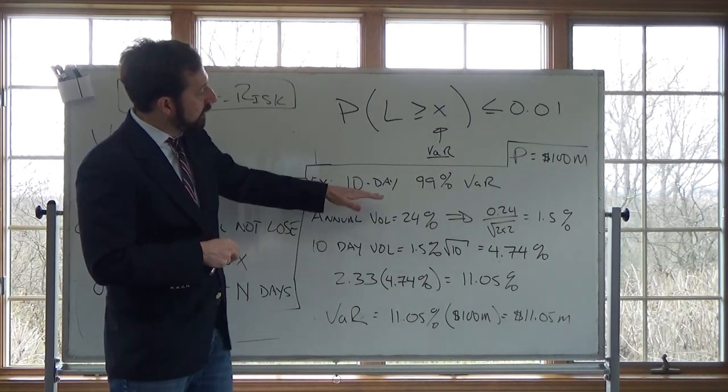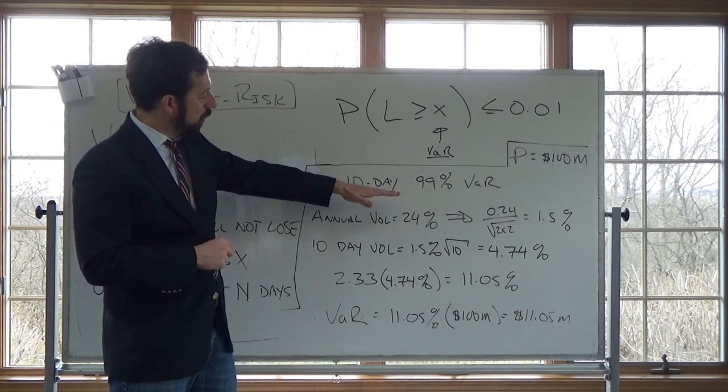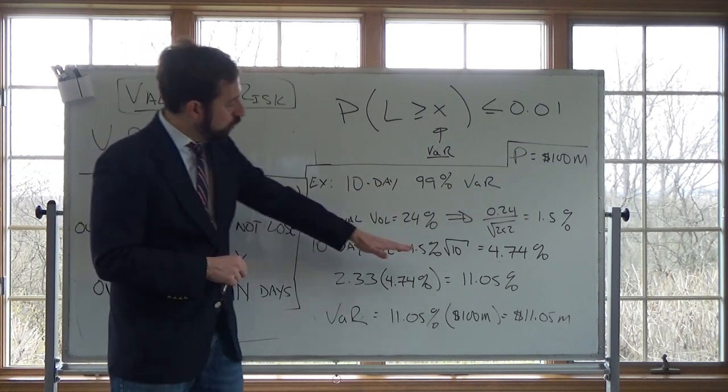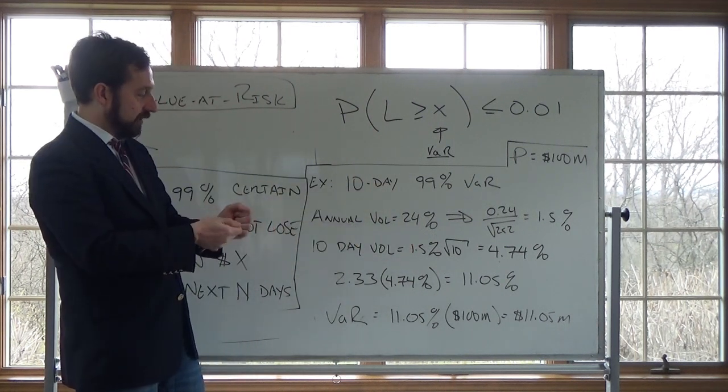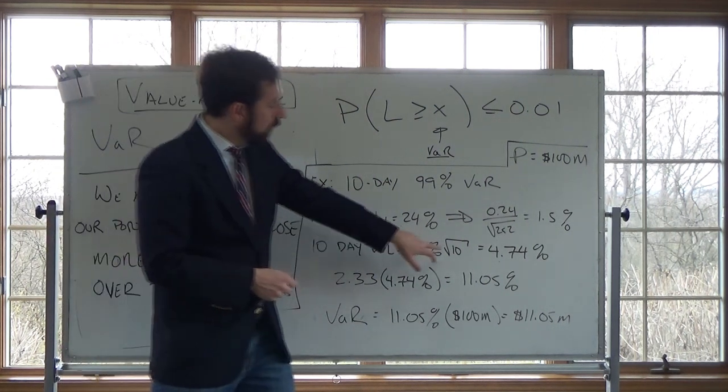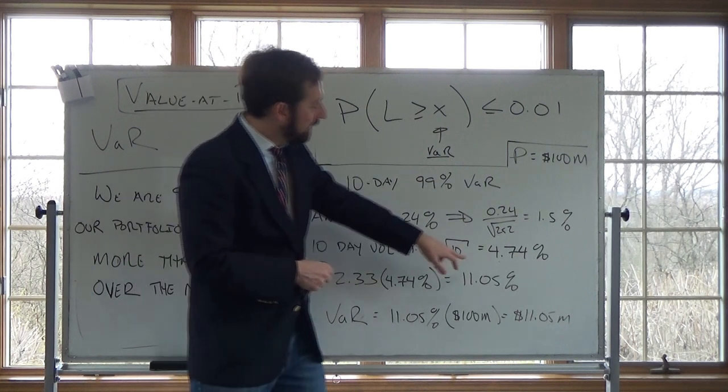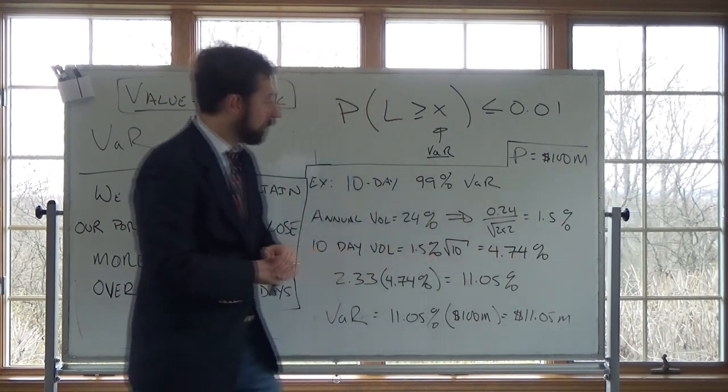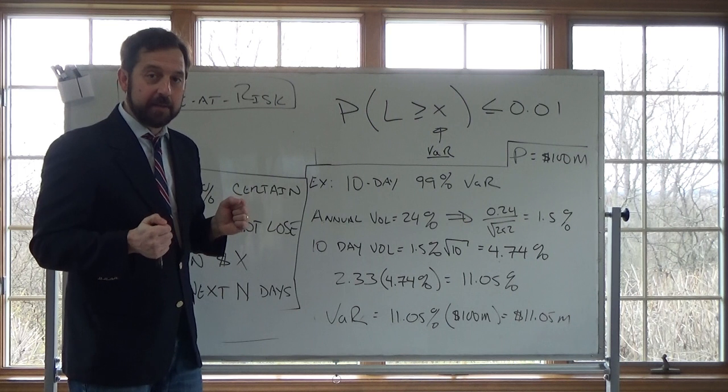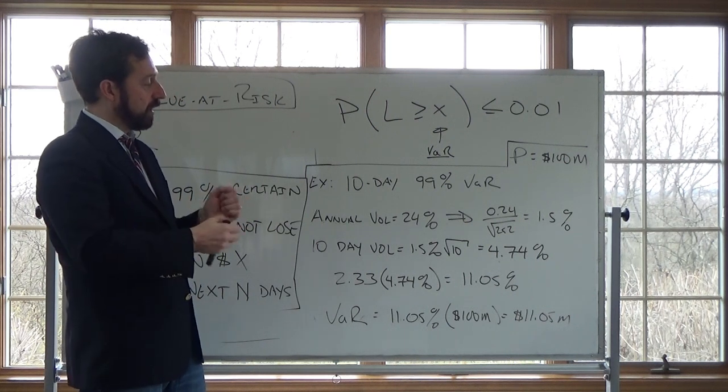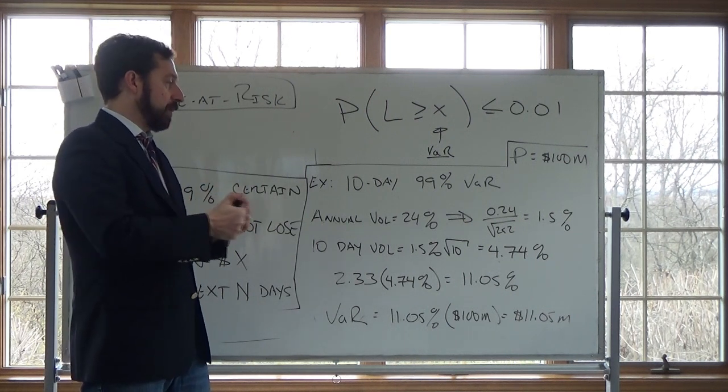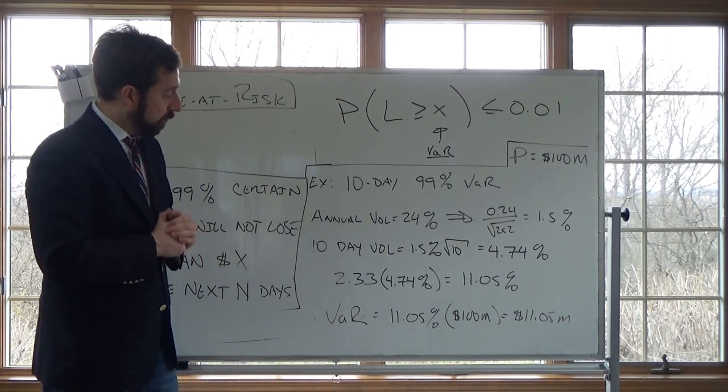Now, if I want a 1-day VAR, then I don't have to do this next step. But assuming I want a 10-day VAR, then I need to take this 1.5% daily volatility, daily standard deviation, multiply it by the square root of 10 for 10 trading days. And this gives me a 4.74% standard deviation over a 10-day period. So over a 10-day period, one standard deviation of my portfolio is going to be 4.74%.